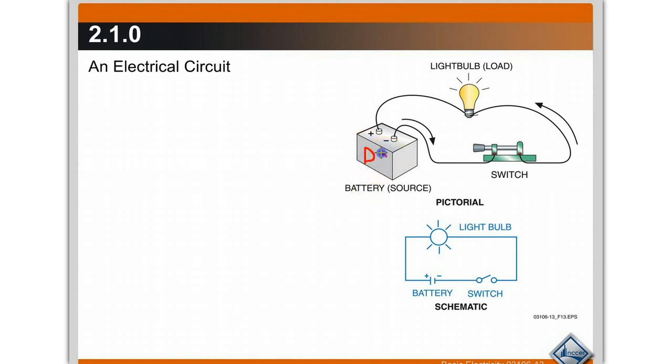This is a direct current circuit, where current flows in one direction. In this circuit, current flows through the wire, through the switch, to the light bulb. The light bulb lights.